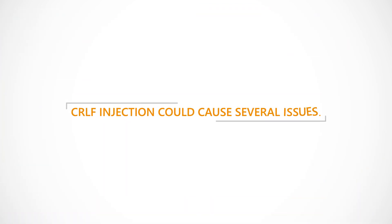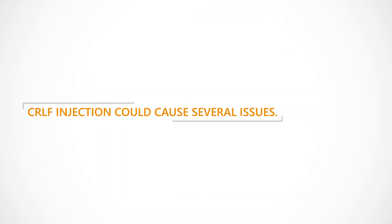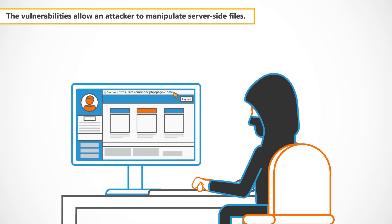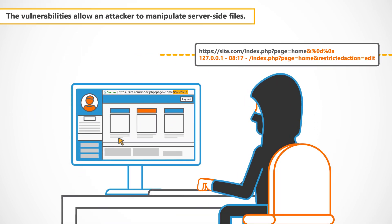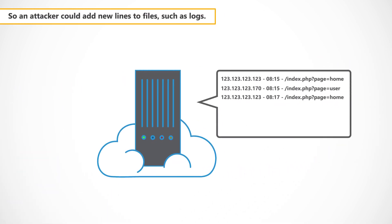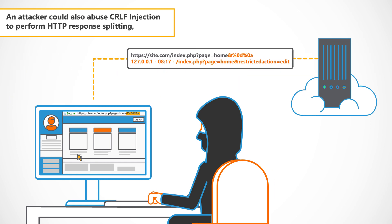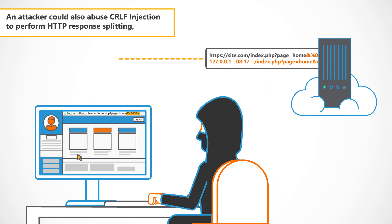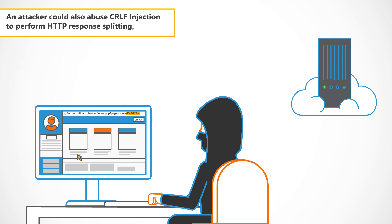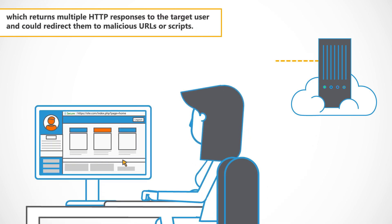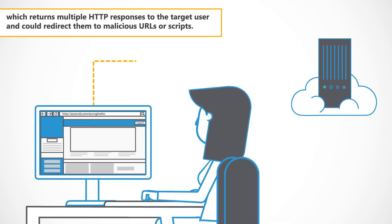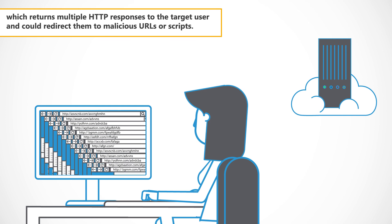CRLF injection could cause several issues. The vulnerabilities allow an attacker to manipulate server-side files, so an attacker could add new lines to files such as logs. An attacker could also abuse CRLF injection to perform HTTP response splitting, which returns multiple HTTP responses to the target user and could redirect them to malicious URLs or scripts.